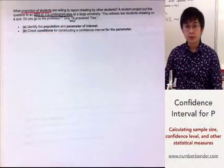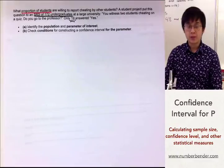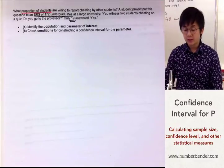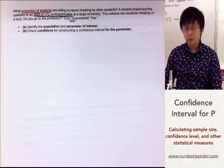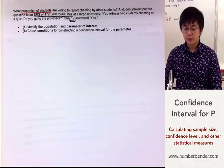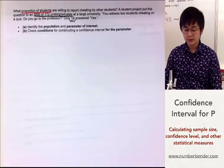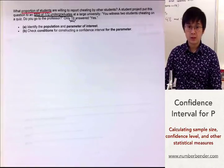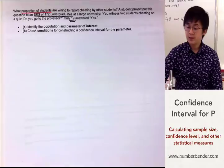Today we're going to be answering problems involving confidence interval for population proportion. The first problem we're going to be working on is identifying the population and parameter of interest.